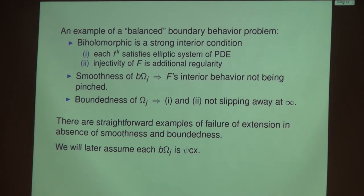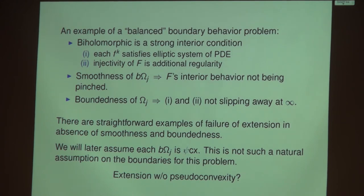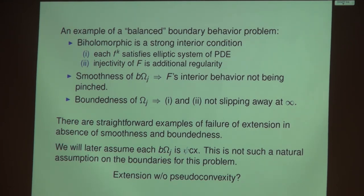In words, omega-1 and omega-2 are domains of holomorphy — natural domains of existence of holomorphic functions. On non-pseudoconvex domains, all holomorphic functions extend past the boundary, including the component functions of F. We need that assumption at this point. It was still a big step to go from quantitative pseudoconvexity — strong pseudoconvexity, finite type — to the theorem I'm going to talk about today, which assumes pseudoconvexity but no quantification of that. The question at the end suggests it's basically wide open without any pseudoconvexity hypothesis at all.